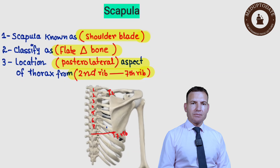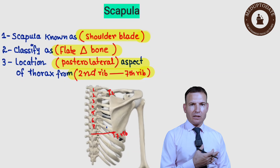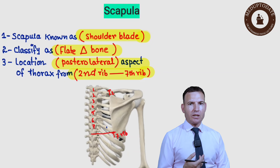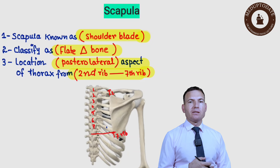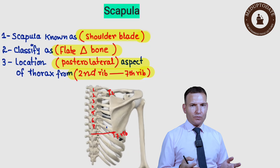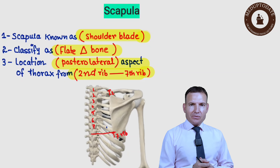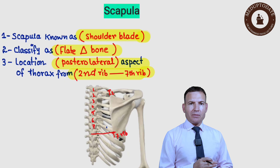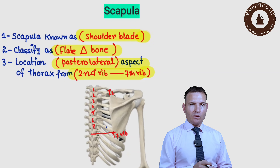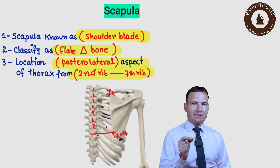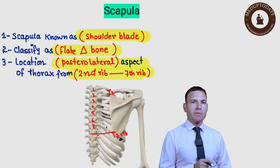Scapula means 'shoulder blade.' This comes from Latin origin, translated to 'shoulder blade.' By morphological classification of bone, this is one of the flat bones — it is a thin bone, triangular in shape.